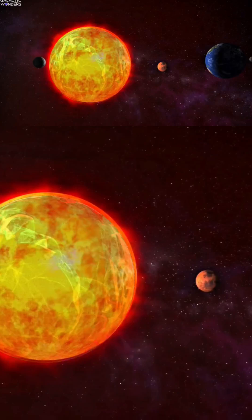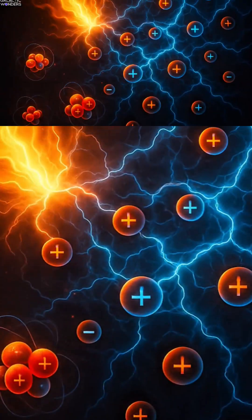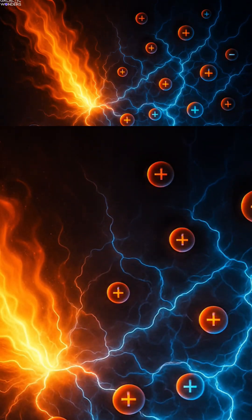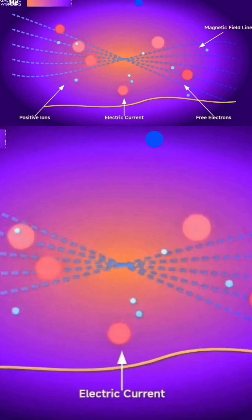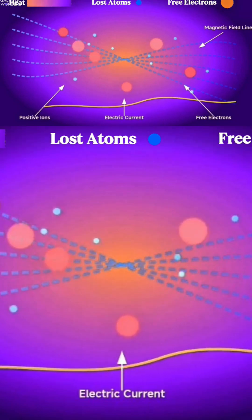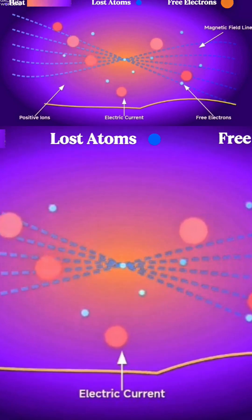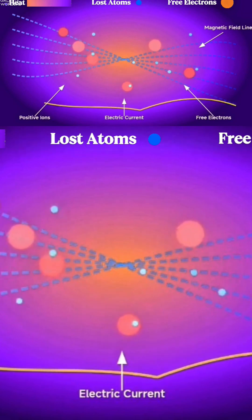But what exactly is it? When you heat a gas to ridiculous temperatures, something dramatic happens. The electrons get ripped away from their atoms, creating a soup of charged particles that behaves nothing like a regular gas.